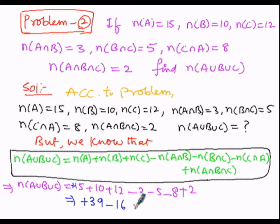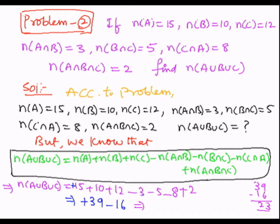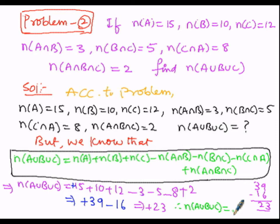To simplify further, plus of minus is minus, so we subtract: 39 minus 16. 9 minus 6 is 3, 3 minus 1 is 2, giving the value 23. Since 39 is greater than 16 and 39 is positive, 23 takes the sign of positive. Therefore, N of A union B union C is equals to 23.